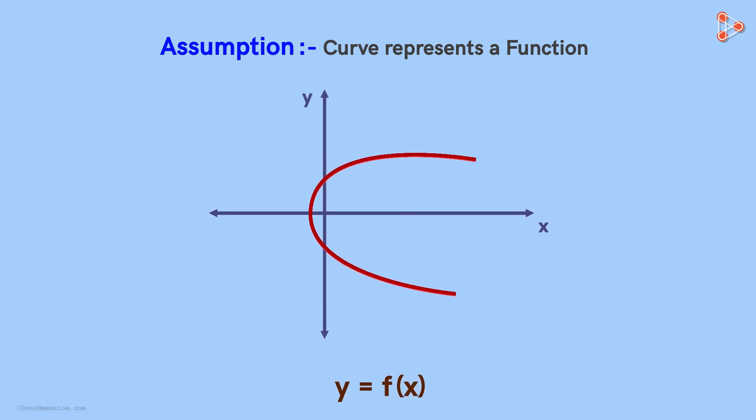Now let's come back to our question. Look at this point on the X axis. We denote it by X1. Now we see that related to X1, there are two values of the variable Y. And that's why this curve does not represent a function.